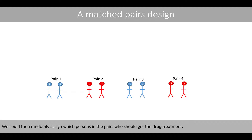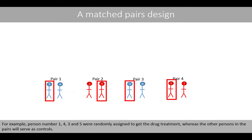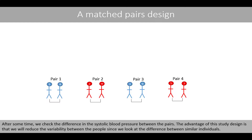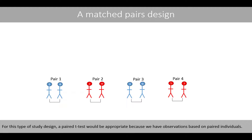We could then randomly assign which persons in the pairs should get the drug treatment. For example, persons number one, four, three, and five were randomly assigned to get the drug treatment, whereas the other persons in the pairs would serve as controls. After some time, we check the difference in the systolic blood pressure between the pairs. The advantage of this study design is that we reduce the variability between people since we look at the difference between similar individuals. For this type of study design, a paired t-test would be appropriate because we have observations based on paired individuals.